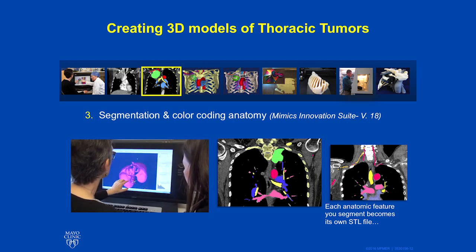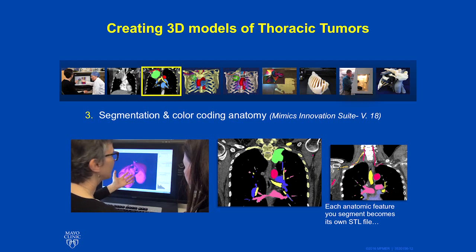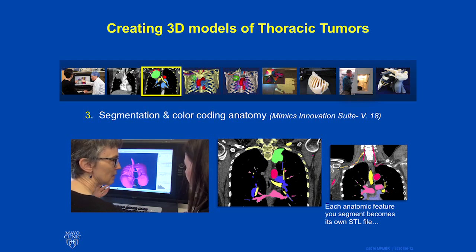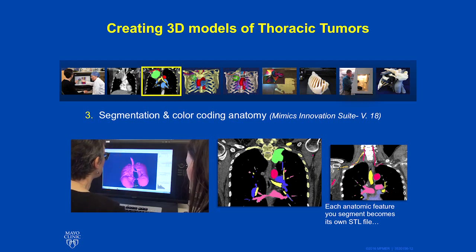We color code based on Hounsfield units initially. You can select dense bone for chest, aortic contrast, air, or certain soft tissue density.